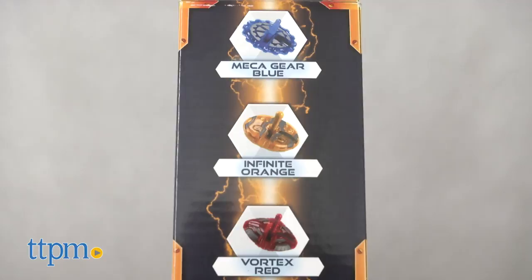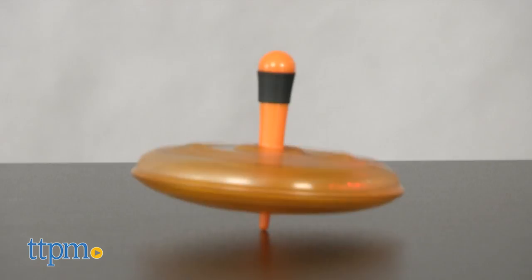ITOP comes in red, orange, blue, yellow, green and purple. Each one is sold separately.